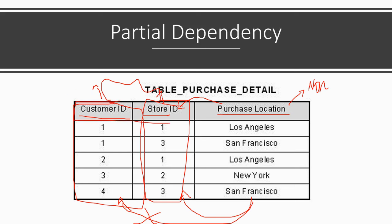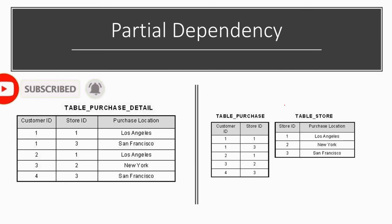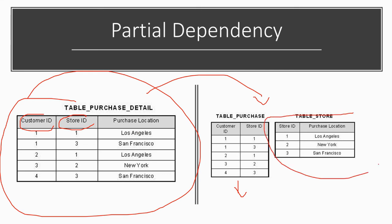Since purchase location should depend on both parts of the composite key for full dependency, but it only depends on store ID and not on customer ID, there is partial dependency. To fix this, we decompose the table: one table has customer ID and store ID, and another table has store ID and purchase location. Now there is no partial dependency.